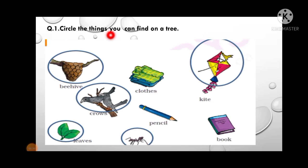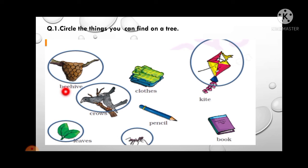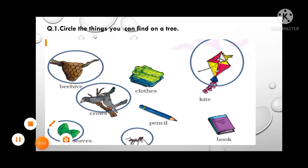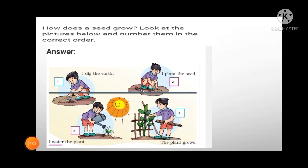Open page number 69. Exercise number one: circle the things you can find on a tree. Things are given with names — whatever you see on the tree, circle them. I have circled here: beehive — you can see the beehive on the tree — crows, leaves, ants, and kites. You can see these things on the tree.